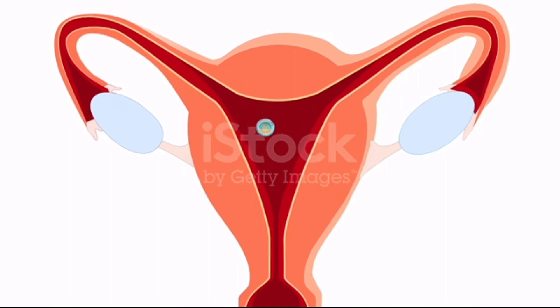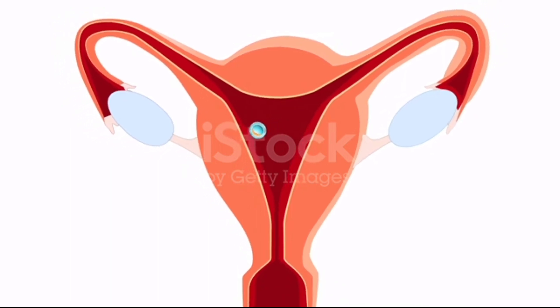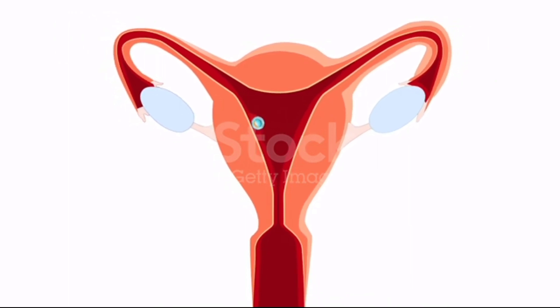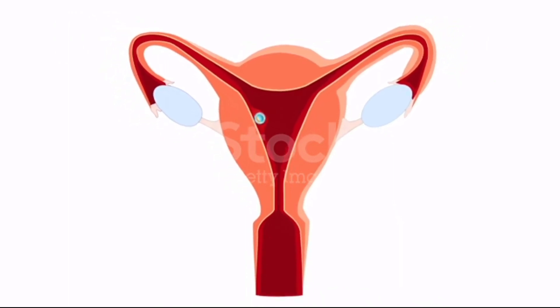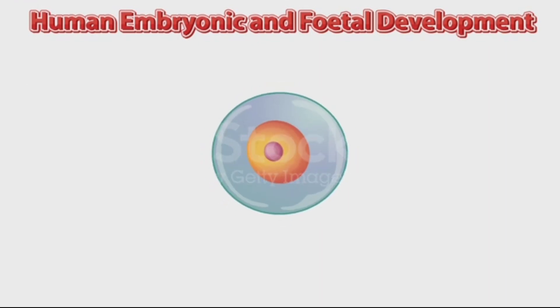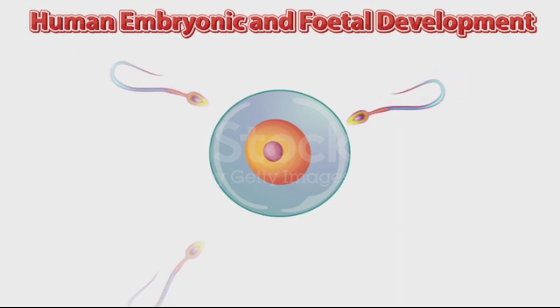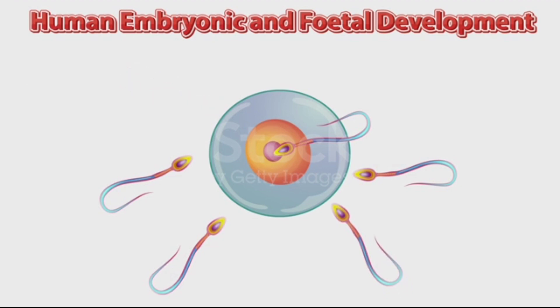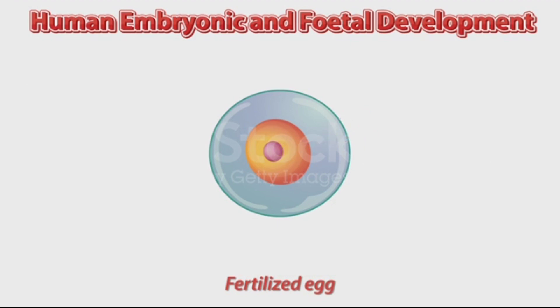Whenever implantation in the uterus occurs, the growth of the fetus starts. Now I will discuss human embryonic and fetal development stage by stage. Here is the egg and the sperm — once the sperm enters the egg, this process is called fertilization, and after this the egg divides into two cells.